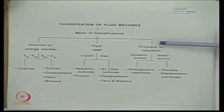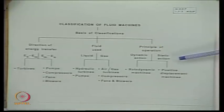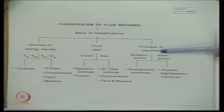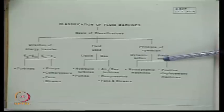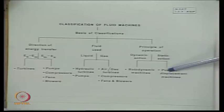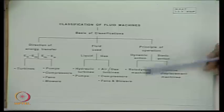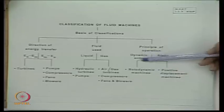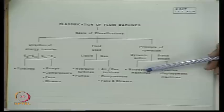The third and most important basis is the principle of operation. Depending upon the principle of operation, fluid machines are classified into two categories: one is known as positive displacement machines, where the principle of operation is based on the static action of the fluid; the other is rotodynamic machines, where the principle of operation is based on the dynamic action of the fluid.